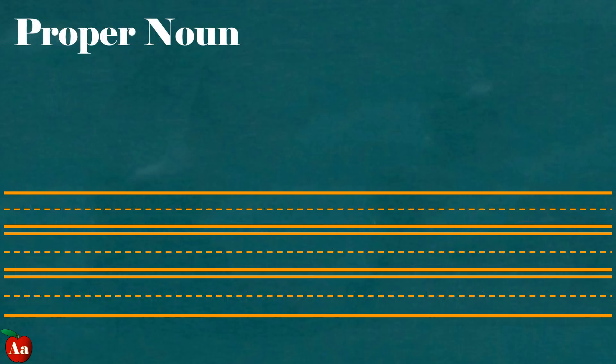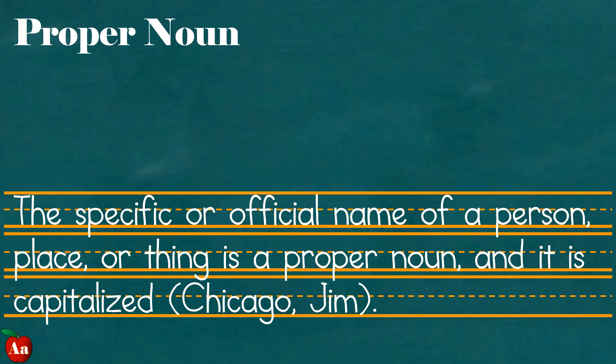Proper noun. The specific or official name of a person, place, or thing is a proper noun and it is always capitalized. The examples are Chicago and Jim.